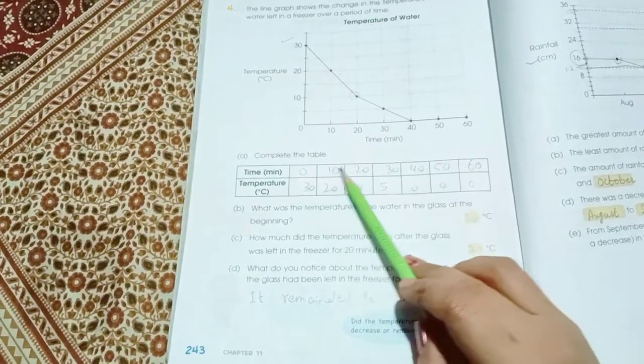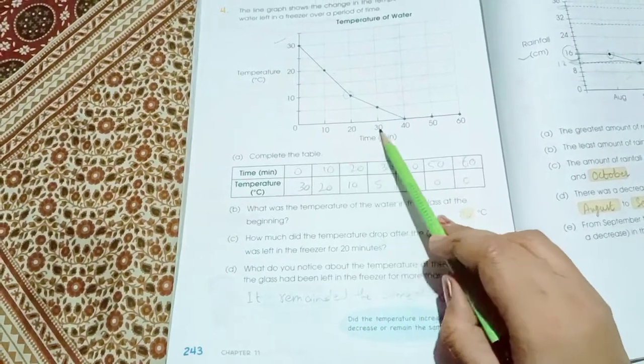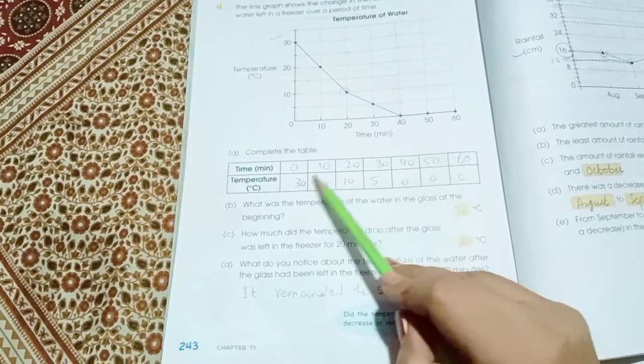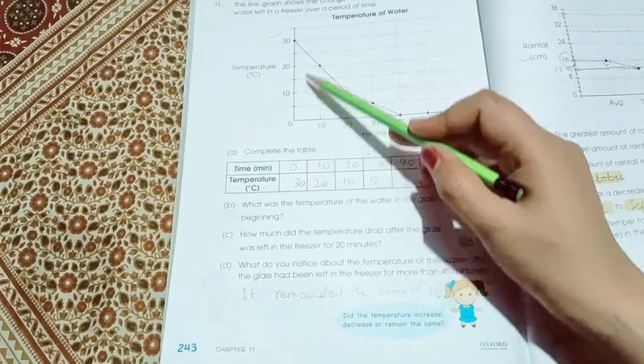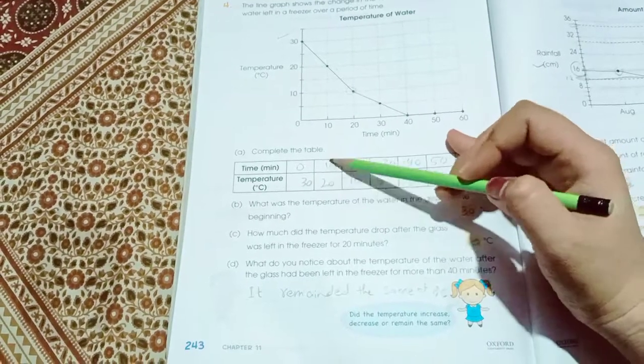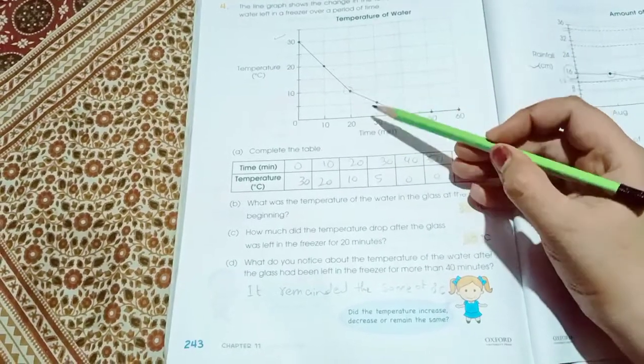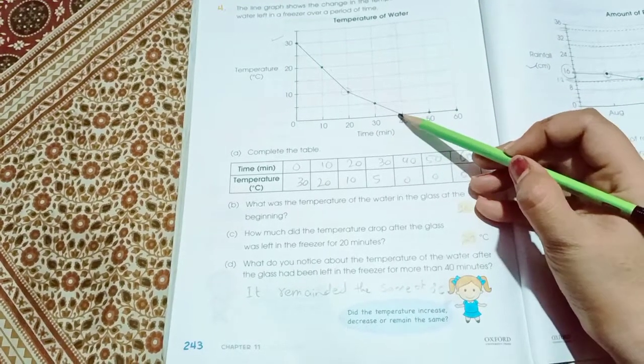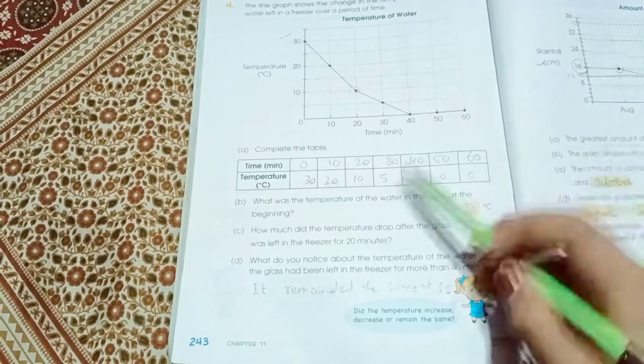Here we have solving page number 243. First we have to fill the time: 0, 10, 20, 30, 40, 50, 60 minutes. And then temperature at 0 is 30. Temperature at 10 is 20. At 20, 10. At 30, 5. At 40, 0, 0 and 0.